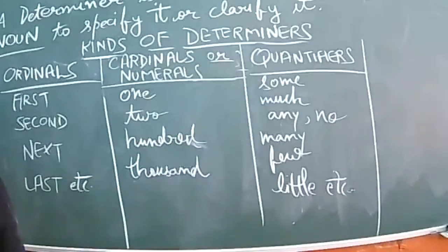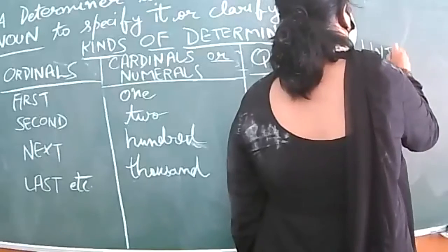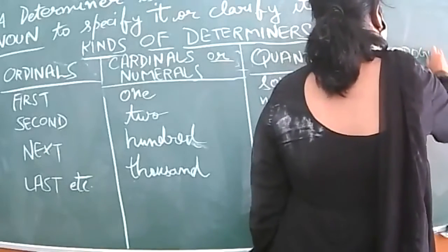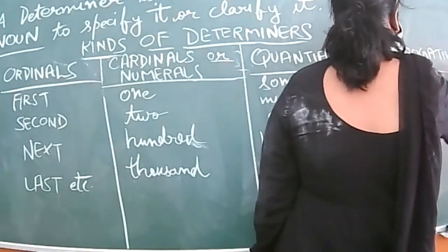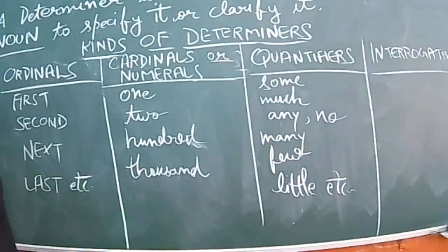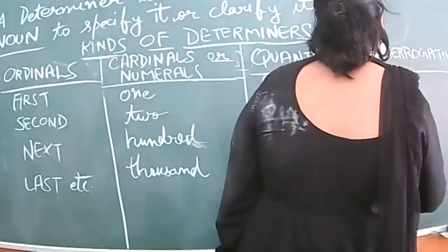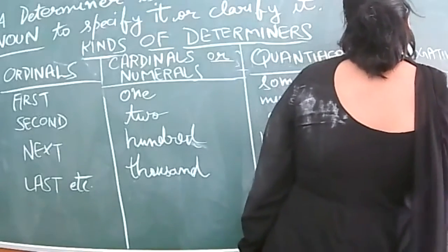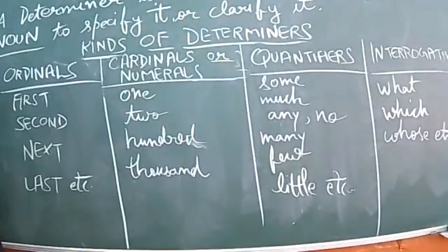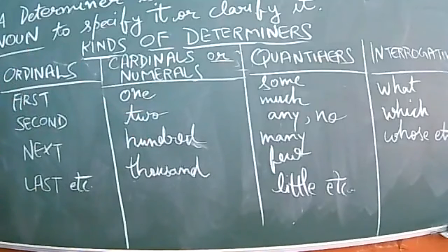The last category is interrogatives, which are rarely used as determiners. Interrogatives here means what, which, whose, etc. These words tell us about reason or quantity — 'what is there', 'which rules' — in that way, specification is done. This finishes the table of determiners.